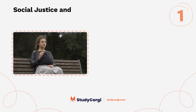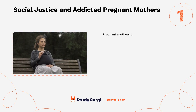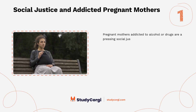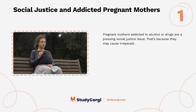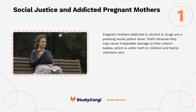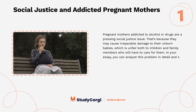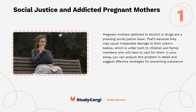Social justice and addicted pregnant mothers. Pregnant mothers addicted to alcohol or drugs are a pressing social justice issue because they may cause irreparable damage to their unborn babies, which is unfair both to children and family members who will have to care for them. In your essay, you can analyze this problem in detail and suggest effective strategies for preventing substance abuse in pregnant women.